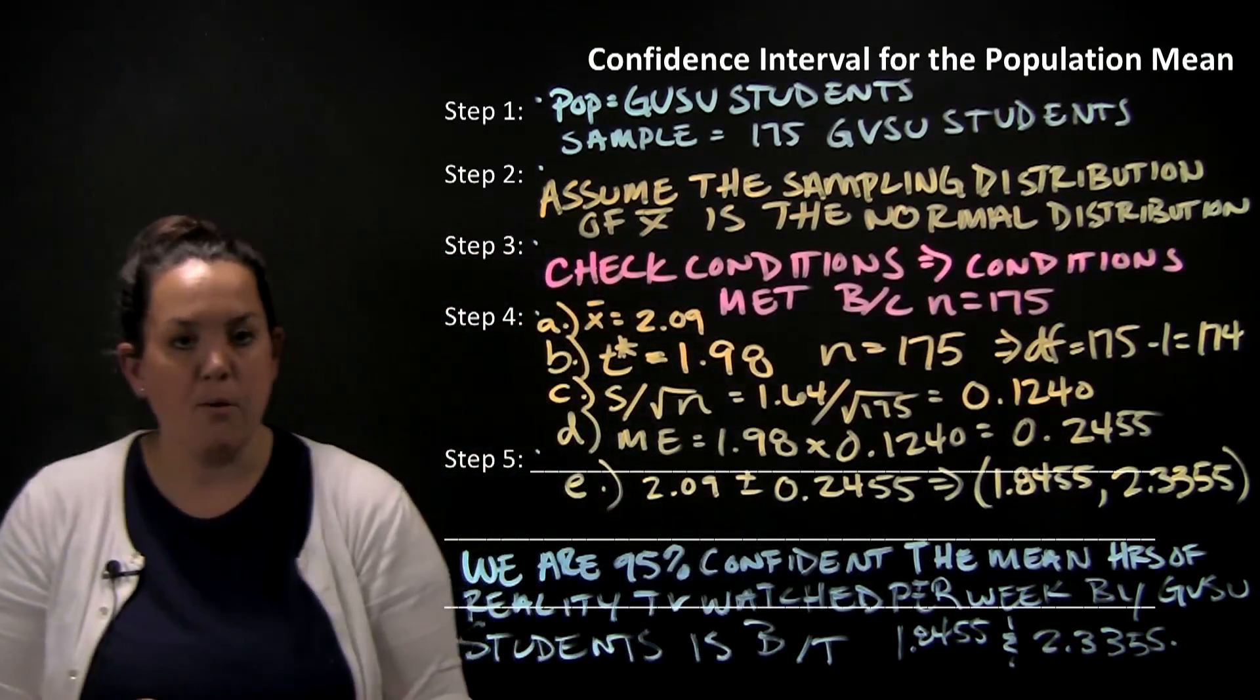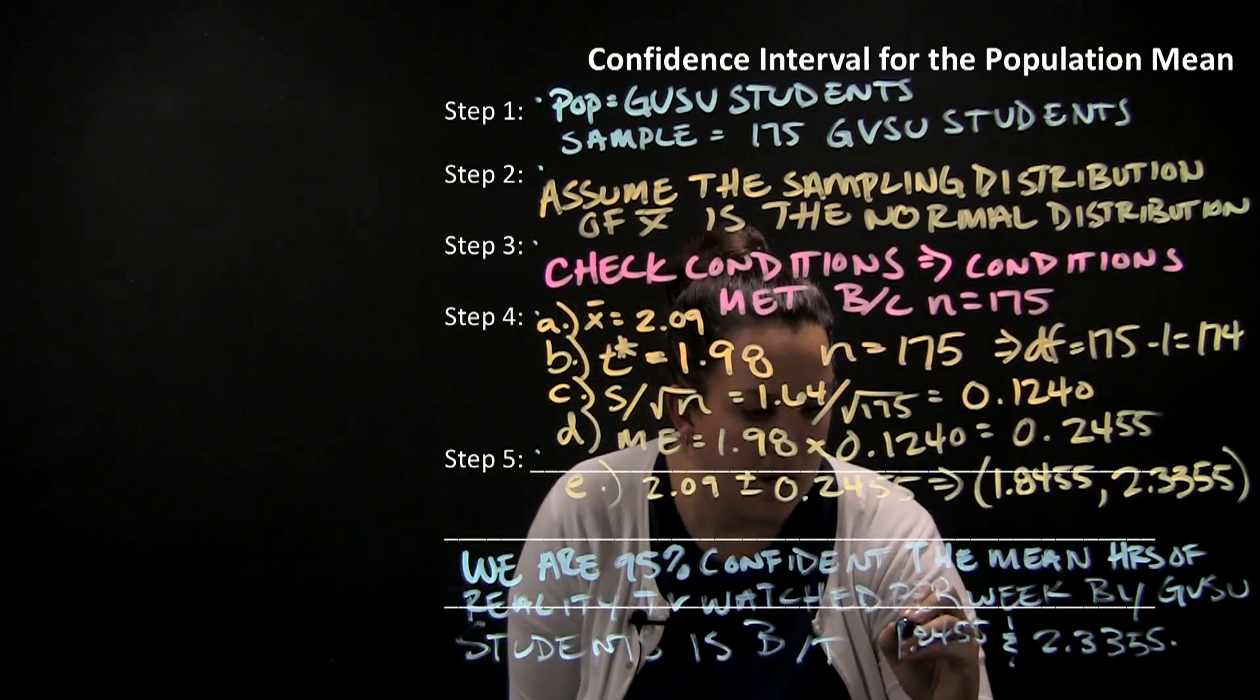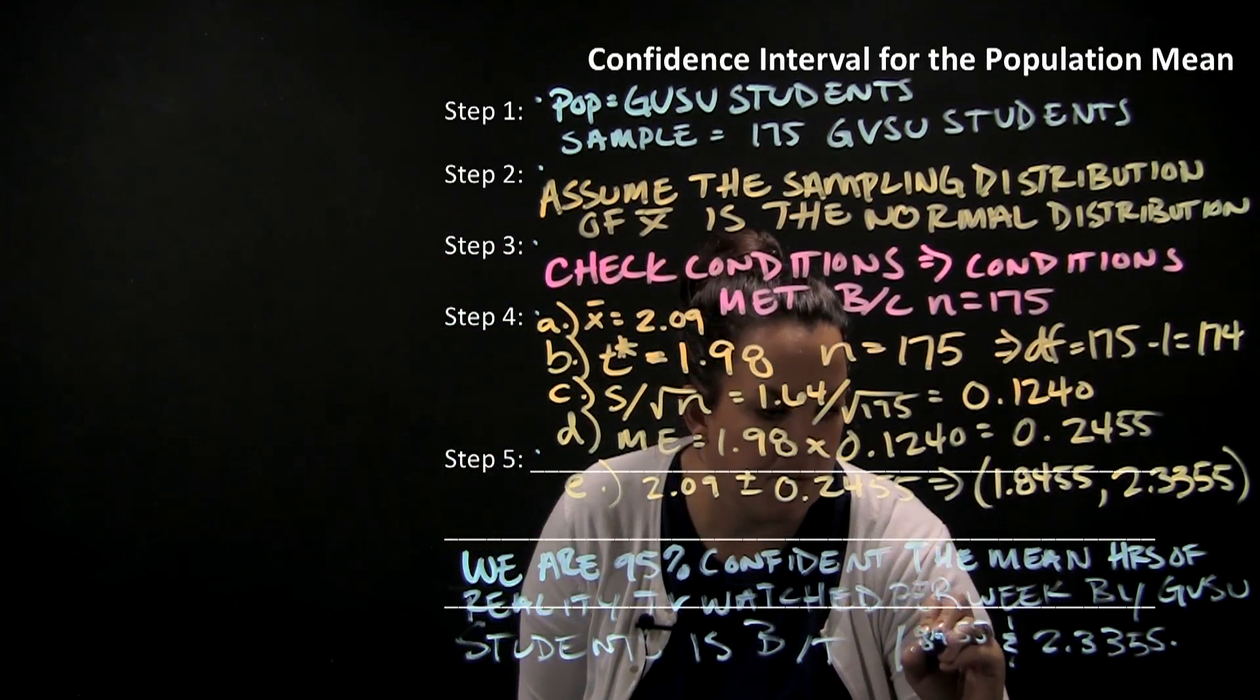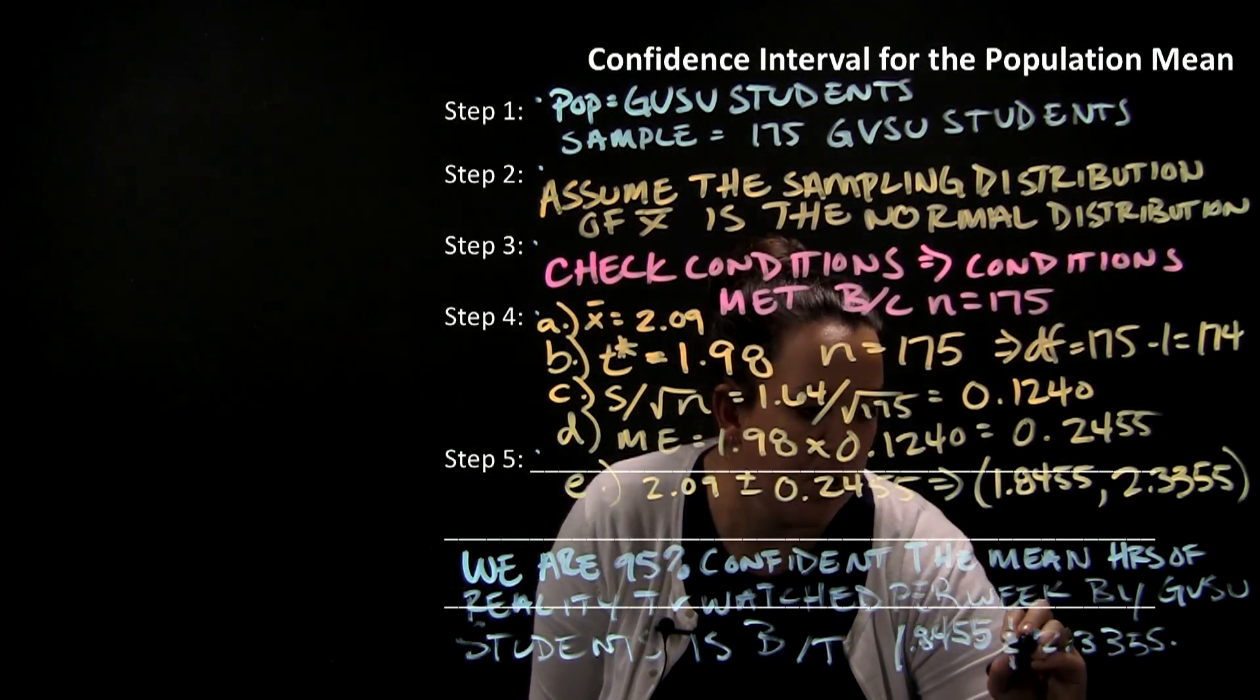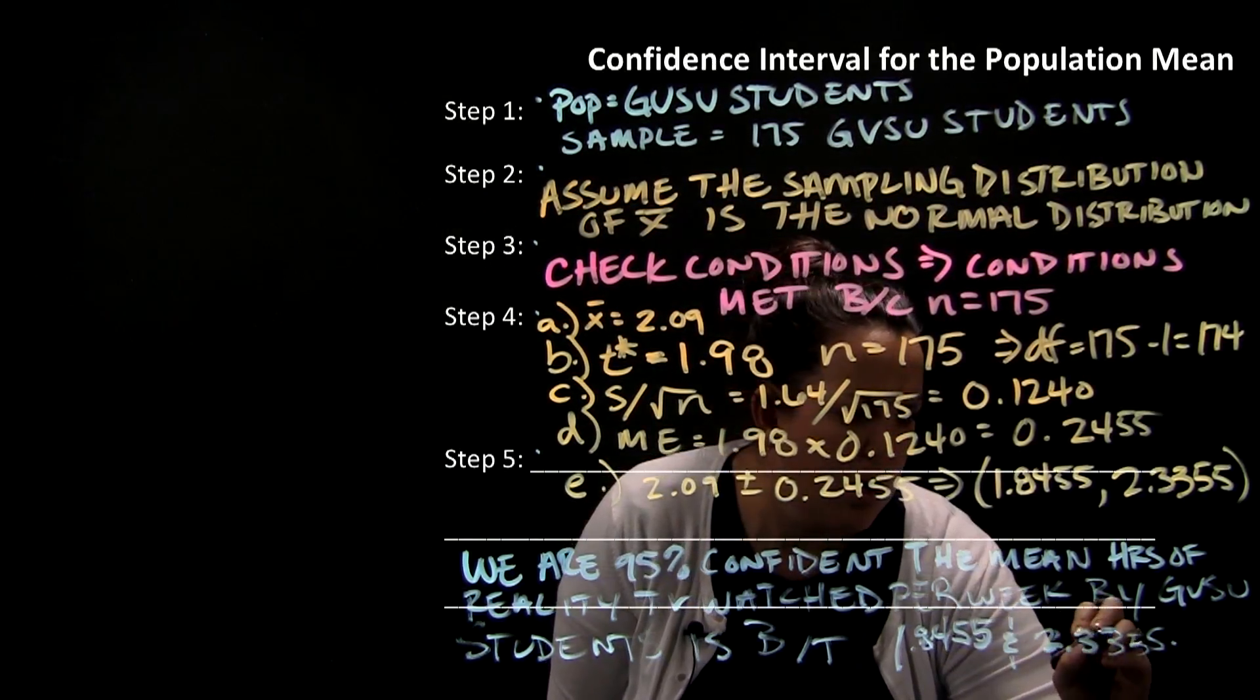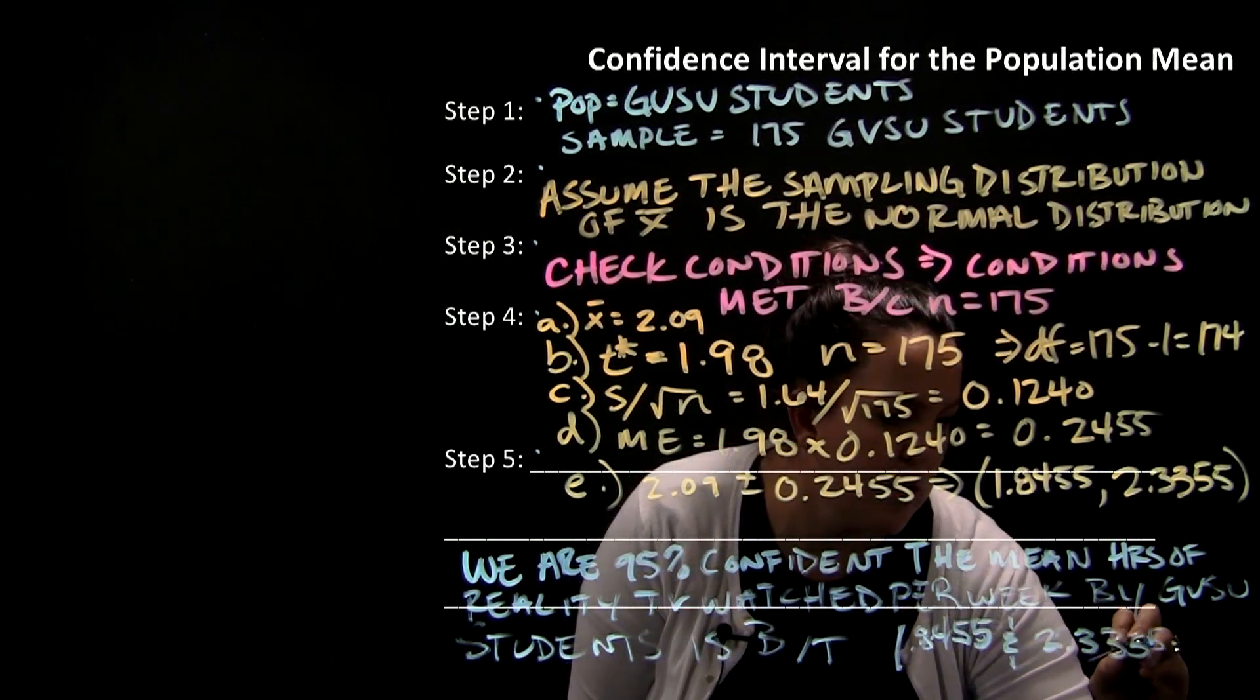And then we'll state the interval itself is between 1.8455 and 2.3355. Now you could restate hours per week there, but because I have included that in my parameter definition, I don't need to include it for a second time here. Make sure that you can see that.